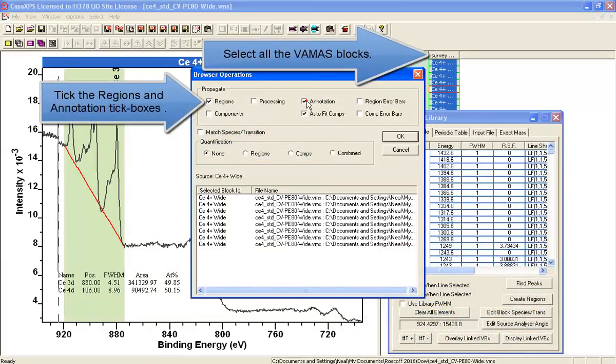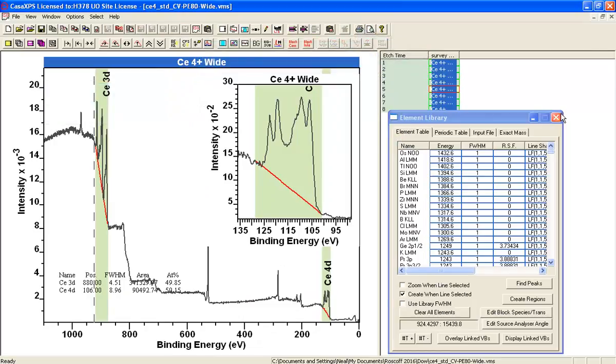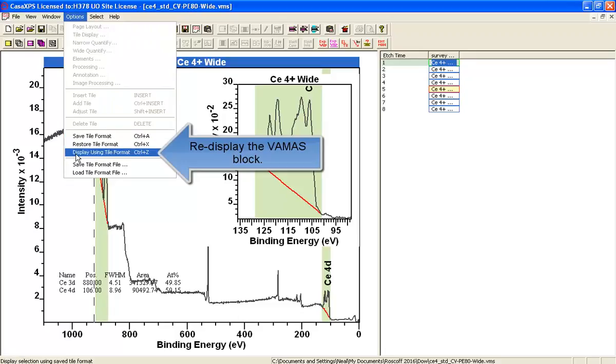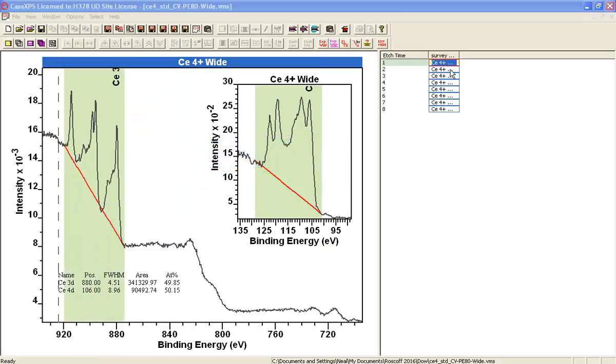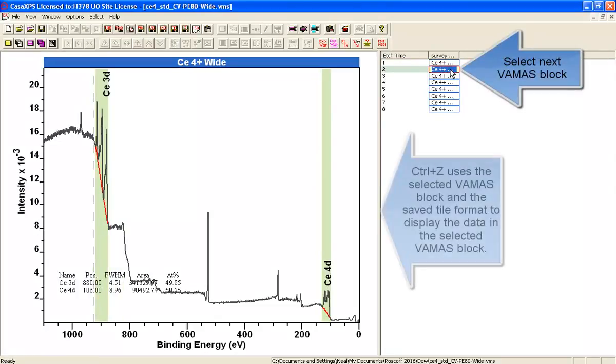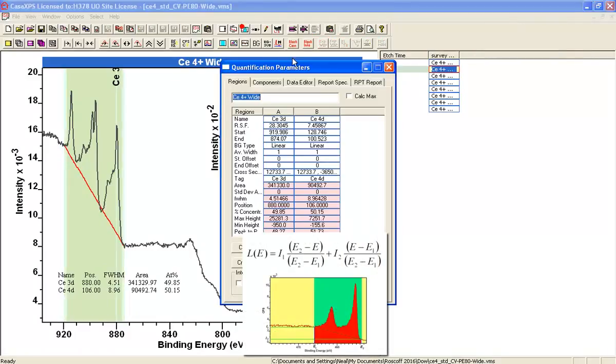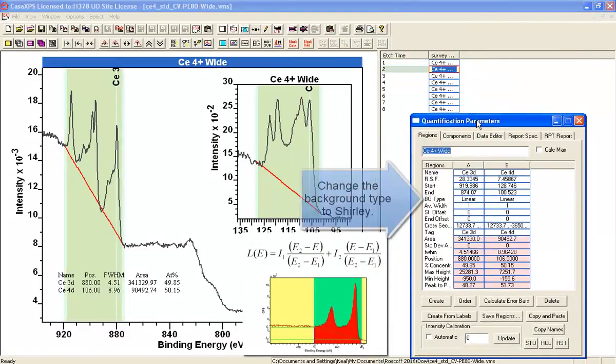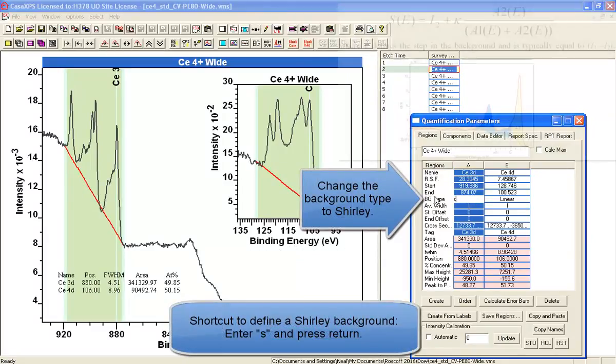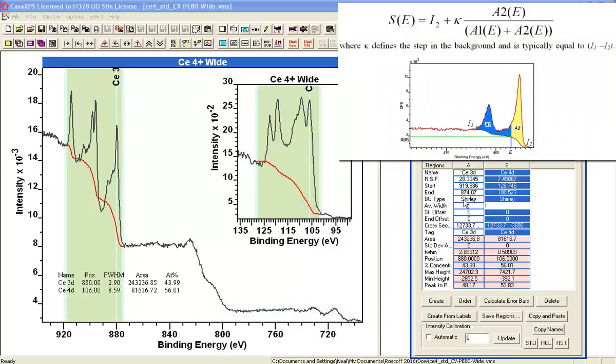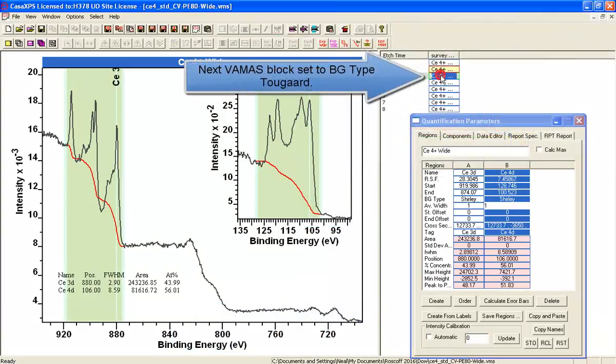We'll just propagate these so that we've got a basis on each one of these VAMAS blocks for changing the backgrounds. This means that when we begin, each VAMAS block will have a linear background. We select one, Control-Z will display it, and if we enter Shirley, that gives us the view of what Shirley might do for these cerium peaks.